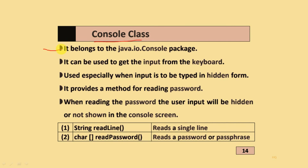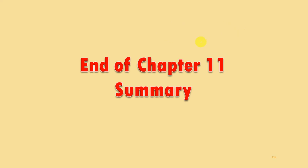The Console class belongs to the java.io package and can be used to get input from the keyboard, especially when input is to be typed in hidden form. It provides a method for reading passwords — when reading a password, user input will be hidden and not shown on the console screen. Its methods include String readLine() and char[] readPassword(). This is the end of the Chapter 11 Summary.